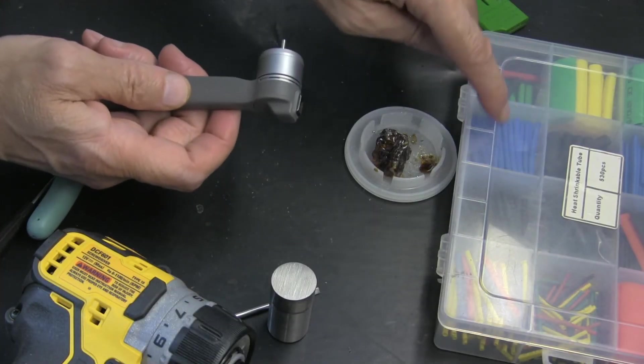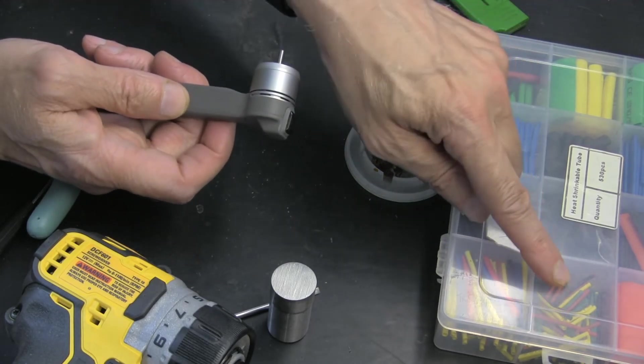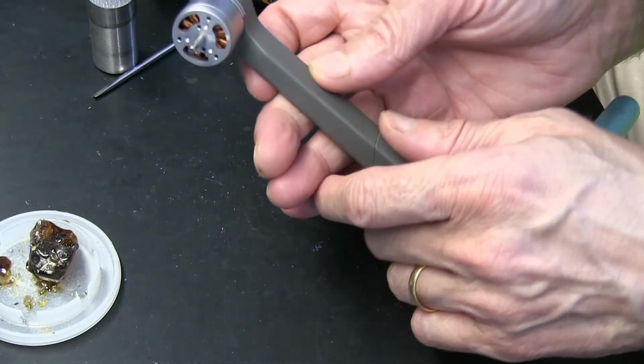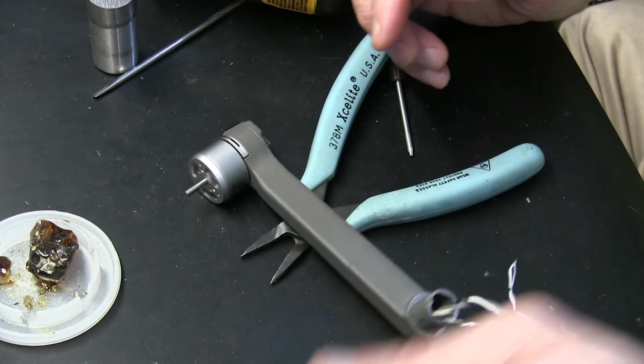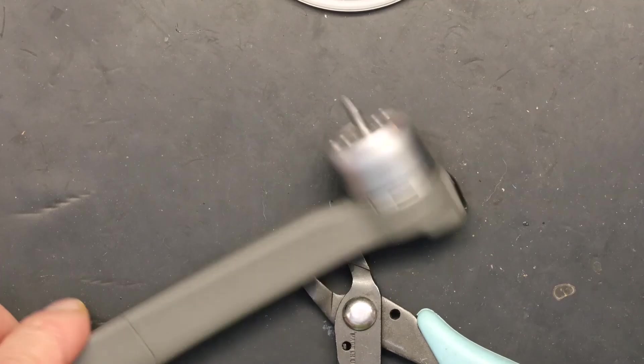This is the heat shrink that I used, I used the yellow ones, the smallest one, and these were the pliers that I used. That's all the tools I used.